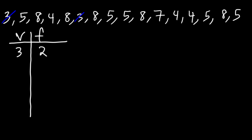Now let's look for the next highest number. The next number in the list is 4, and there are one, two, three fours in our data set. So the number 4 has a frequency of 3.